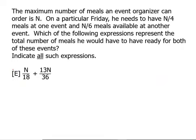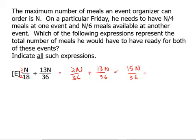Now let's look at E. The least common multiple of 18 and 36 is 36. We multiply the numerator and denominator of the first fraction by 2, giving us 2n over 36 plus 13n over 36. 2 plus 13 is 15, so we get 15n over 36. Canceling factors of 3, we get 5n over 12. So that one also works — E is also a possible answer.